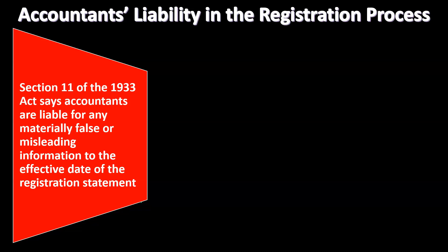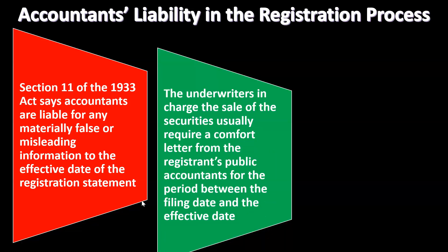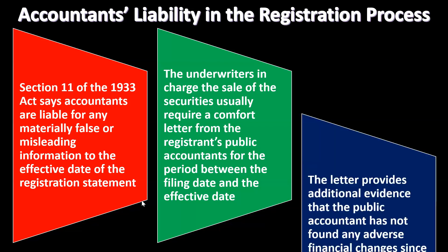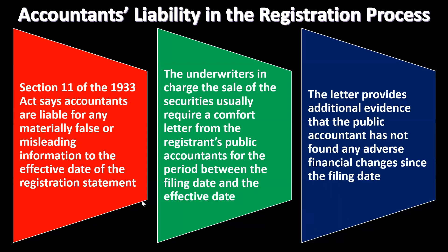Regarding accountant's liability in the registration process, under Section 11 of the 1933 Act, accountants are liable for any materially false or misleading information up to the effective date of the registration process. The underwriters in charge of the sale usually require a comfort letter from the registrant's public accountants for the period between the filing date and the effective date. This letter provides additional evidence that the public accountant has not found any adverse financial changes since the filing date.